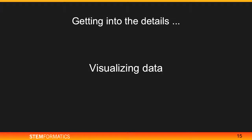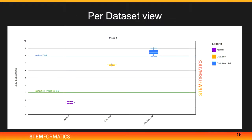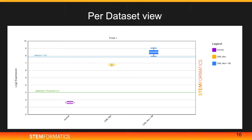Getting into detail on visualizing data — this is how our gene expression graph looks. You can choose your favorite gene, choose a private or public dataset, and view a box plot, bar graph, or scatter graph. You can analyze your data and try to find biological patterns that may be interesting to you. This is when you use a per-dataset view.